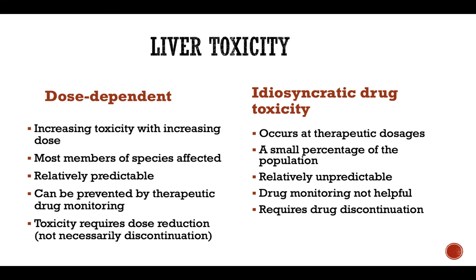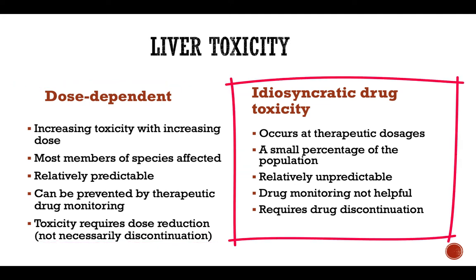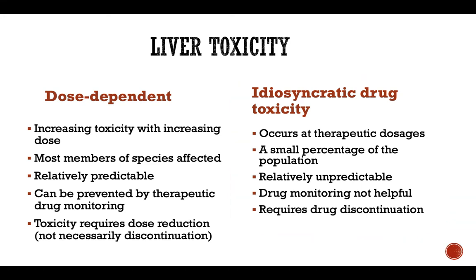All liver toxins and drugs with liver toxic potential may be divided into two big groups: dose-dependent toxicity and idiosyncratic drug toxicity. With dose-dependent toxicity, you usually see increasing levels of toxicity with increasing dose. It's usually very predictable — if you give an appropriate dose there will be no toxic reactions, but if you give a higher dose it's very likely that the patient will develop reactions.